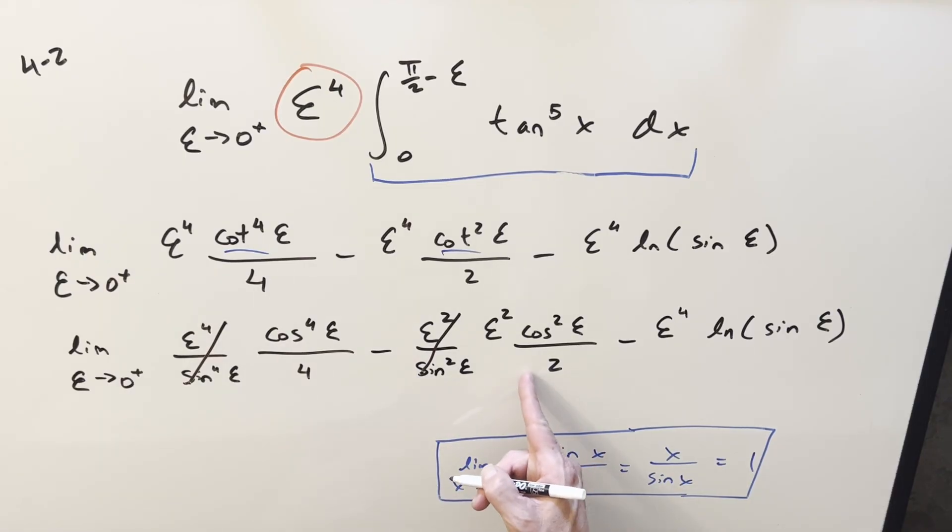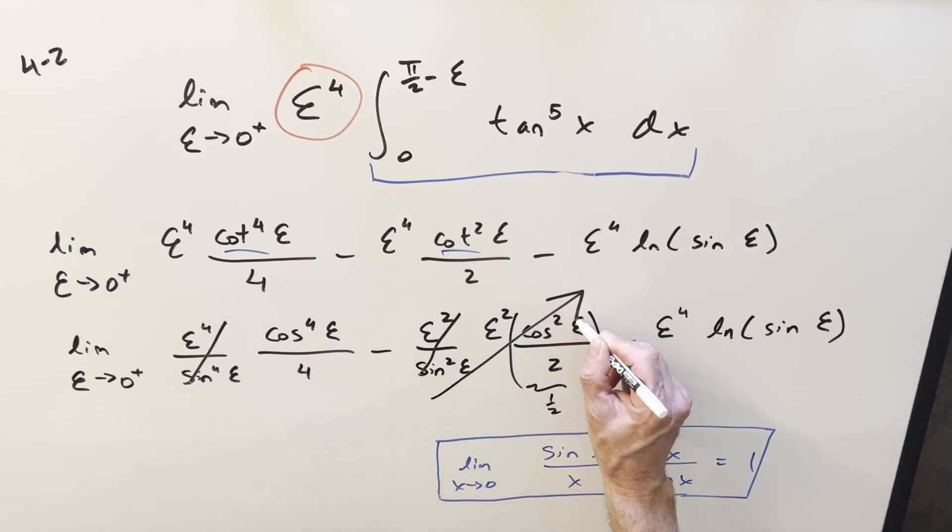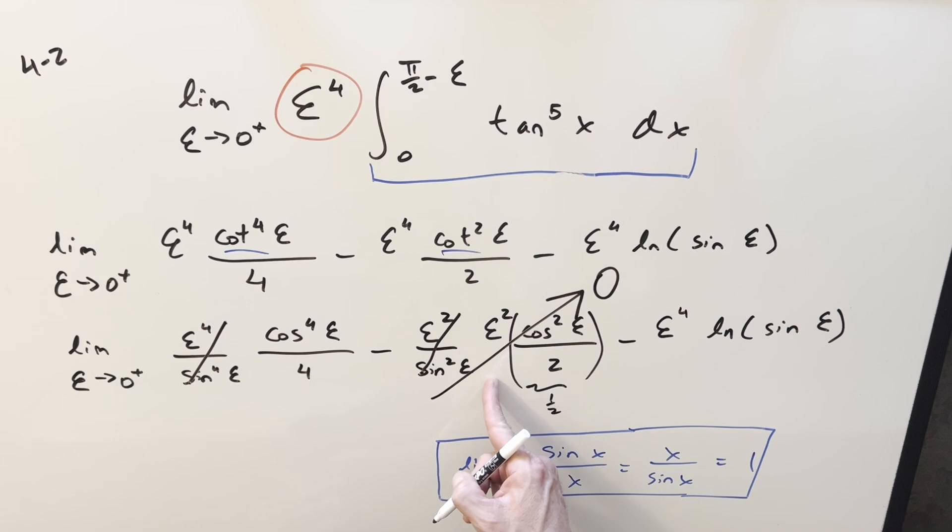Then maybe we can deal with the easy one first. Now we can actually just evaluate like cosine at zero. That's going to be like one. So this piece right here is going to be like one half, but we're multiplying by zero. What it means is this middle term is just going off to zero. So we don't have to worry about that piece.